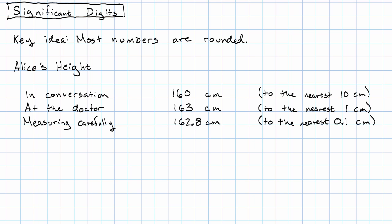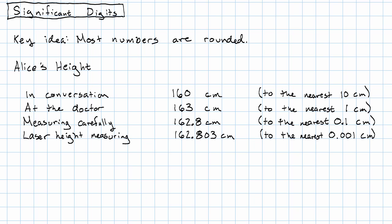Alice goes back to the internet, talks on forums about measuring her height carefully, and finds a spiffy laser height measuring device on Kickstarter. When the laser height measuring device arrives in the mail, she measures her height again and finds that her height, according to the laser device, is 162.803 centimeters — rounding to the nearest .001 centimeter. And even that is probably not her true exact height. If she measured it to the nearest millionth of a centimeter, she would probably still get a slightly different number.